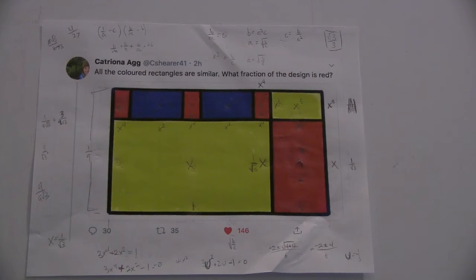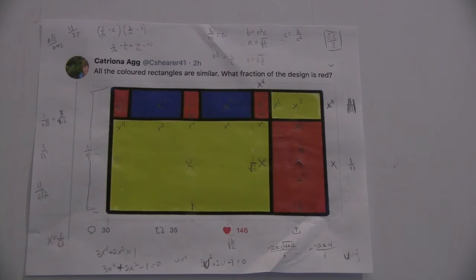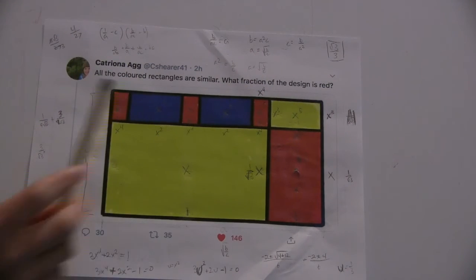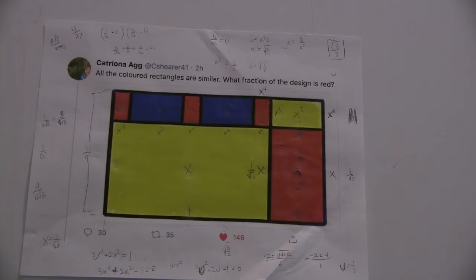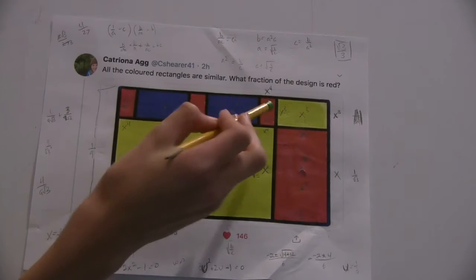So at first I was a little confused because I thought all of the pairs of the colored rectangles were similar, like all of the reds were similar to reds and yellows were similar to yellows, blues were similar to blues. But it just says all the colored rectangles are similar, so all of these small rectangles are similar.